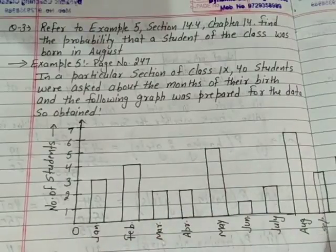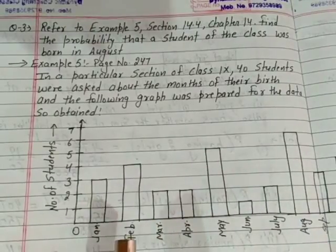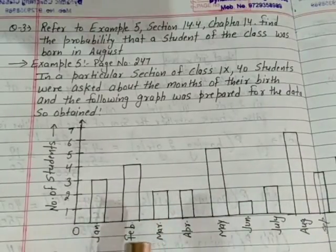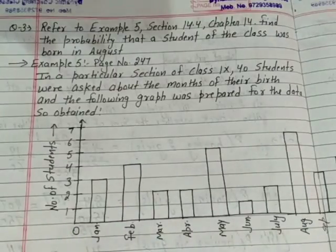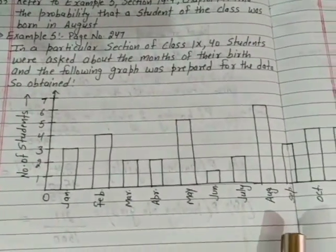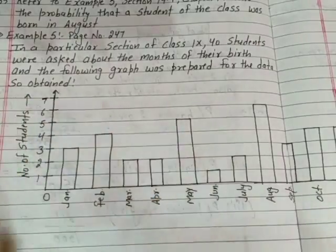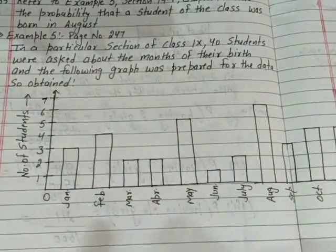This graph was given, showing how many students were born in which month. Look at this graph — one axis shows number of students and the other shows months.